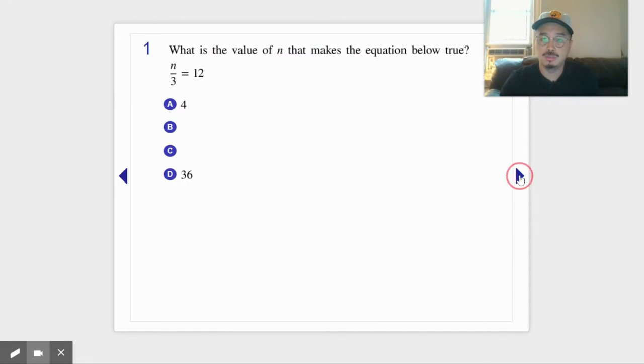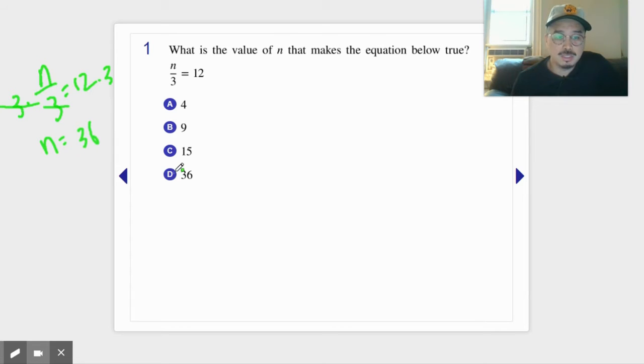Number one, let's do this one together. The question is something like n over 3 equals 12. What's the value of n that makes the equation true? So how we resolve it, you multiply by 3, cross cancel. 12 times 3 is 36. There you go, there's your choice.